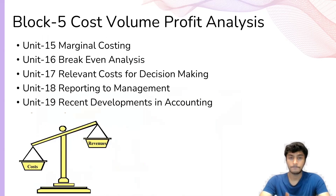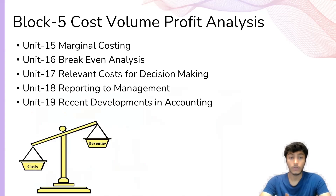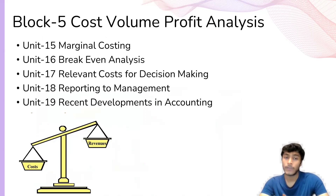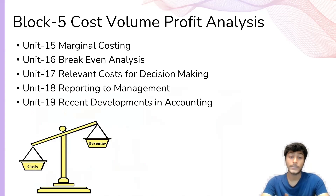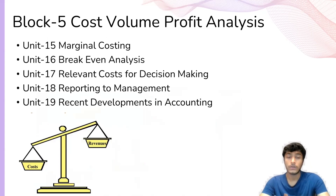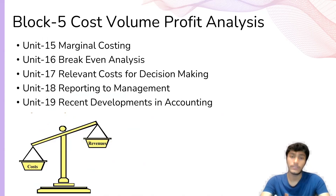Coming to the last block, which is cost-volume-profit analysis. We will discuss marginal costing — what is the additional cost to produce a particular product or service — and break-even analysis, which is the point where total revenue and total cost match. What is the break-even point of sale, how much quantity we need to sell to attain the break-even point, and what are the relevant costs for decision making — for example, what different kinds of costs we need to consider to make a particular decision from the management perspective.